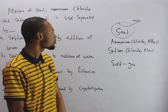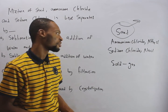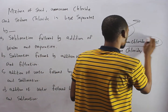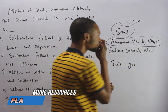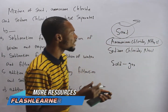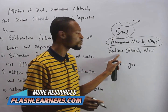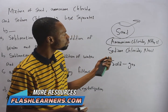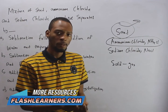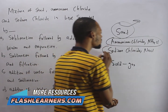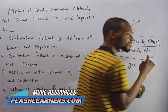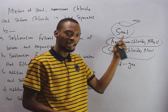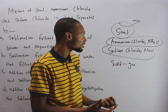So once you take it through sublimation, ammonium chloride sublimates and goes off, and we are left with sand and sodium chloride. If we add water, sodium chloride will dissolve completely in water, leaving behind sand, because sand doesn't dissolve.